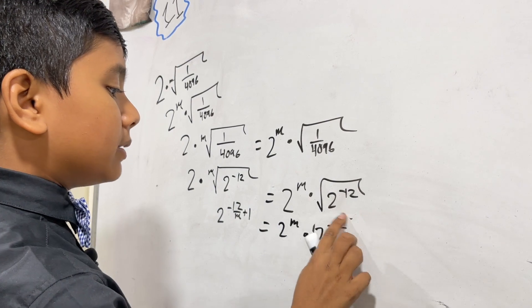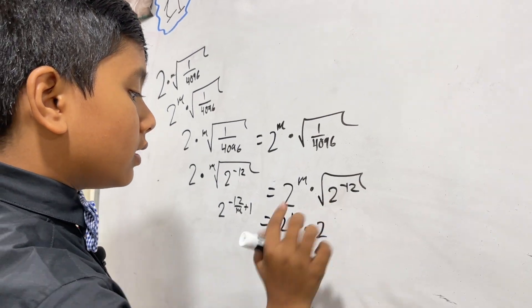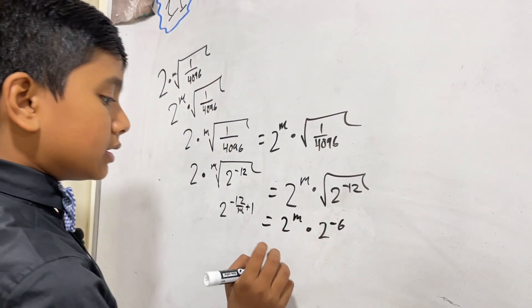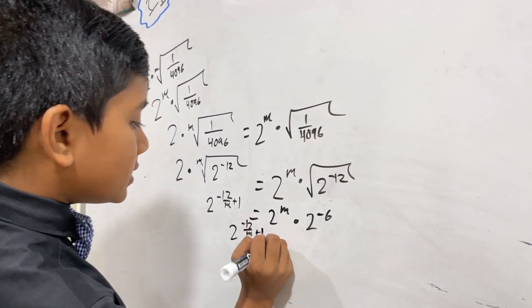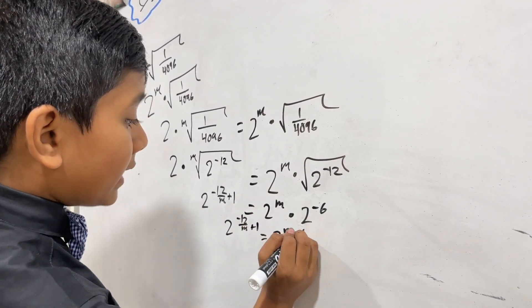So that means this would actually become 2 to the minus 6, which makes that 2 to the m minus 6.